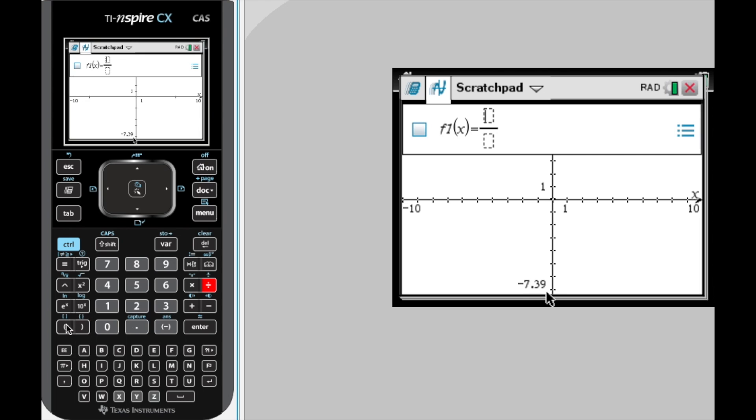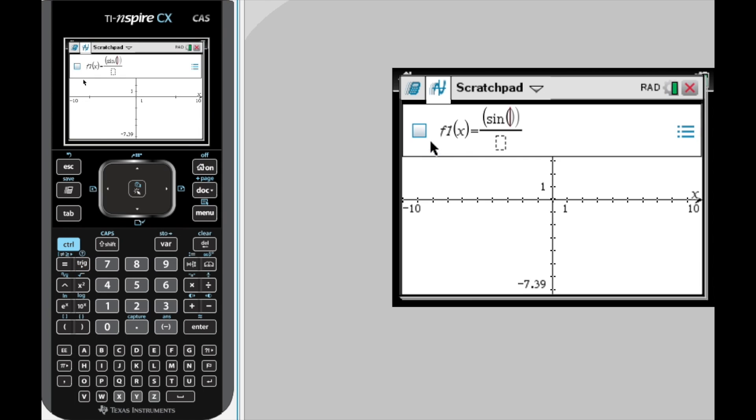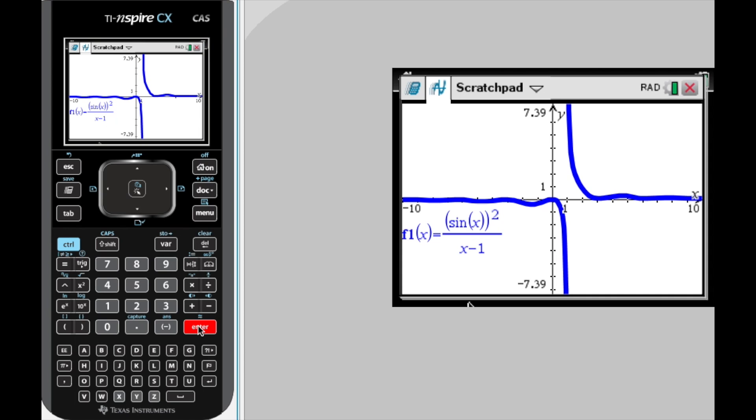We are going to set that fraction up. We are going to do a set of parentheses, trig function, sine, make sure your calculator is in radian mode, of x. We are going to get out of those parentheses and hit the square button. Over x minus 1. And then hit graph or enter.